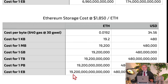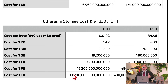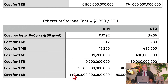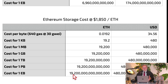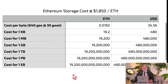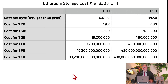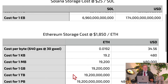Think about it. For one terabyte — I have one terabyte on this MacBook — to store the whole contents of my MacBook on Ethereum would cost $480 billion. That's almost half a trillion dollars. For one petabyte and one exabyte, I won't even pronounce those numbers.